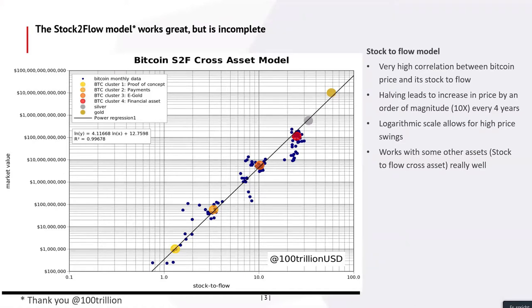What's very strong about the stock-to-flow model is a very high correlation between the price and the stock-to-flow. The R-squared is really high and there's also co-integration. Even just visually, with the dots, you see a strong fit. And it also works with other assets — not just Bitcoin, but also gold, silver, houses, and other things.